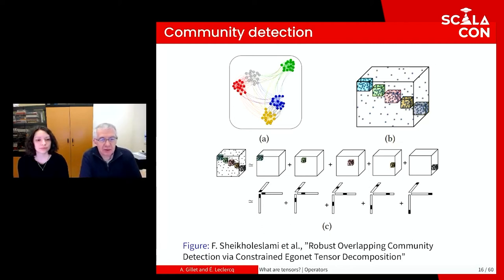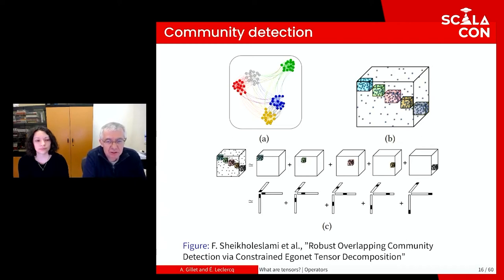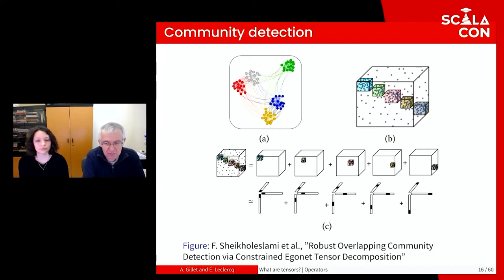Tensor decomposition is very useful when analyzing social network data such as tweets, where users have multiple kinds of interactions — retweets, mentions, and hashtags. All these interactions can be modeled together in a tensor, and communities of users can be characterized by the hashtags they use. So instead of having just a list of users in a community, you also get the hashtags used by the community, which enhances interpretability for domain experts.